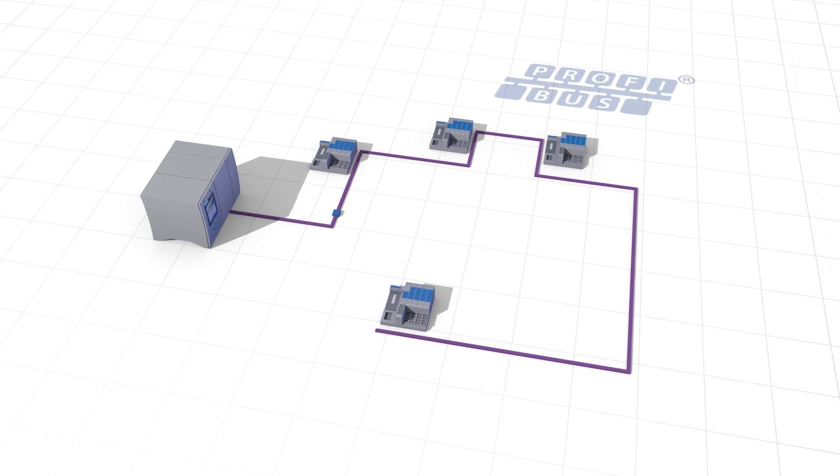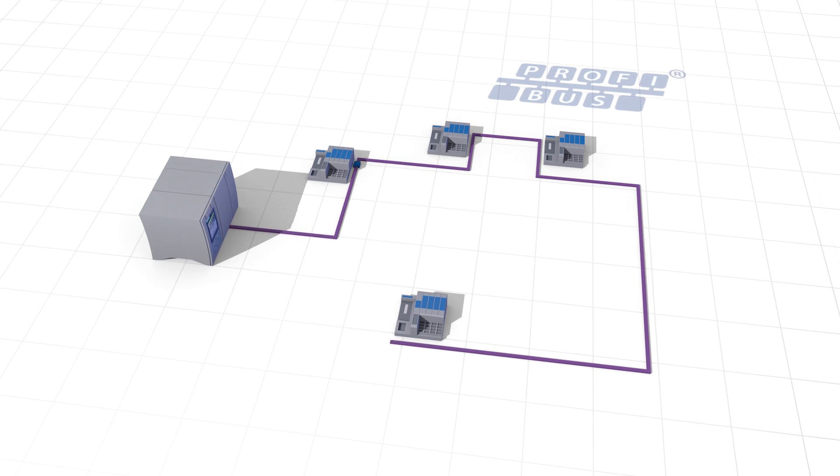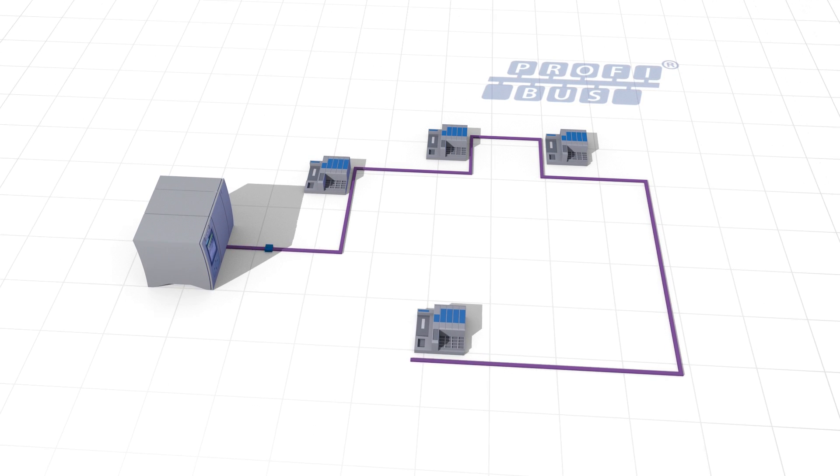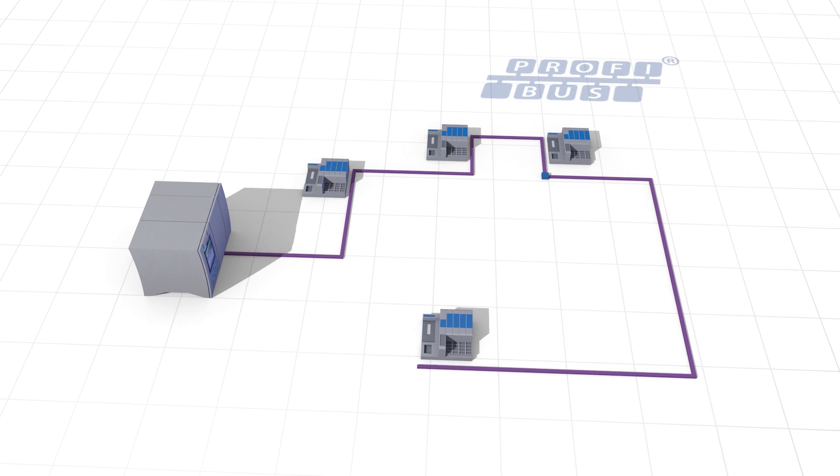With PROFIBUS, master and slaves are connected by one single line pair. There is a constant question and response relationship in which the master gradually checks on all its slaves.